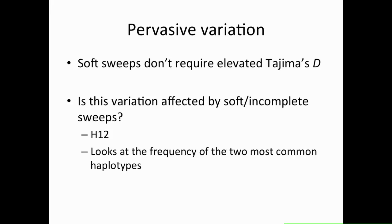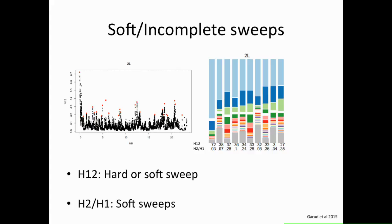There is clearly excess variation not being maintained by demography or balancing selection. Soft sweeps don't require elevated Tajima's D, but they are consistent with it. So we wanted to see if this variation might be affected by soft or incomplete sweeps. We looked at a haplotype homozygosity statistic, H12, which examines the frequency of the two most frequent haplotypes for evidence of a soft sweep. Looking at H2 over H1 compares the frequency of the second haplotype to the first — the higher the value, the softer the sweep.